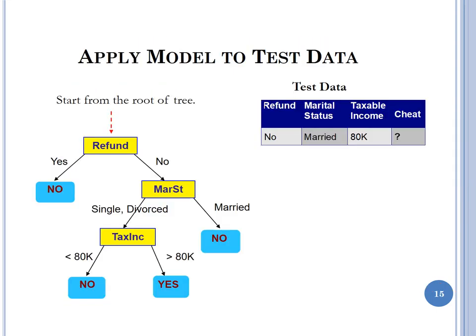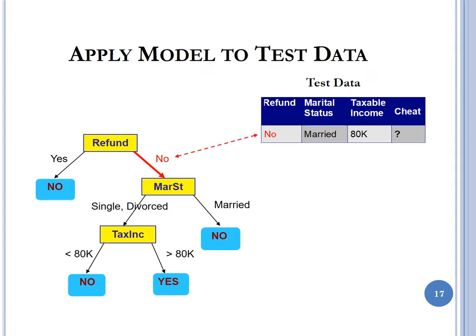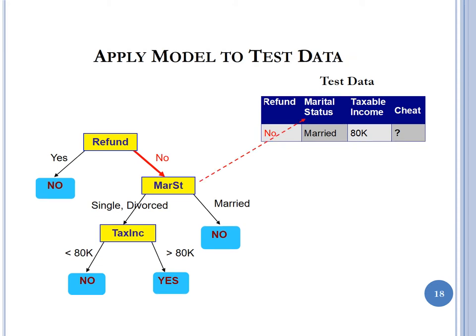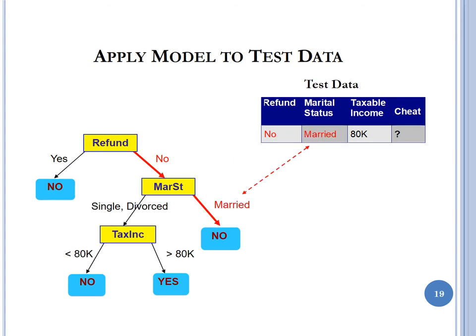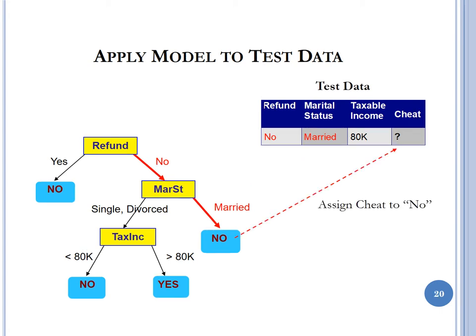The goal of a decision tree is to build a model and then validate it using test data. Running a test case: the test person has refund=no, so we go right on the tree. Their marital status is married, so we continue on that branch, and the result is they will not cheat on their taxes. That is their classification.